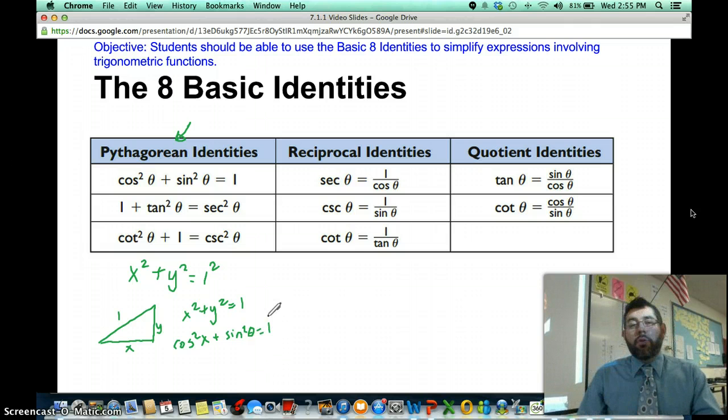These come from the unit circle. We can find 1 plus tangent squared equals secant squared, and cotangent squared plus 1 equals cosecant squared theta. We can use the first one to get the other two as well.